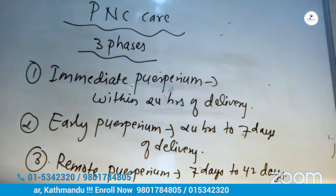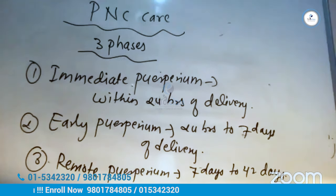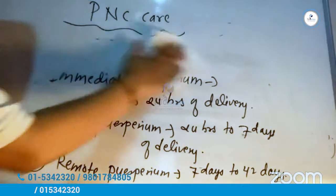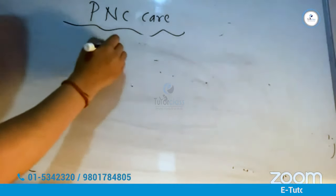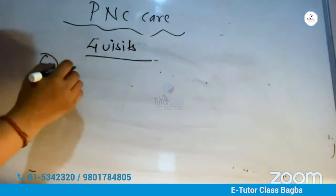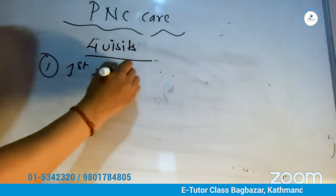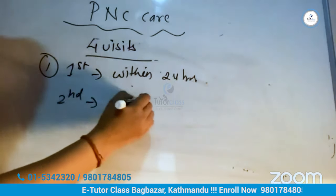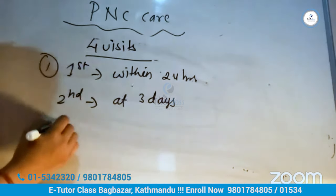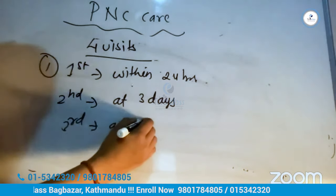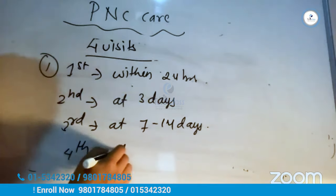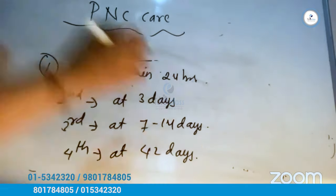The puerperium is divided into three phases. The postnatal visits will be 4 visits: within 24 hours, at 3 days, at 7 to 14 days, and a final visit at 6 weeks.